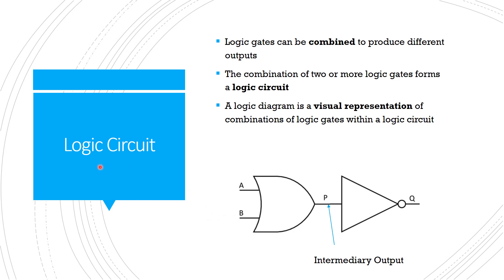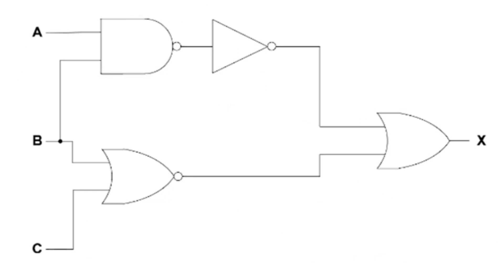Next is logic circuit. A logic circuit is basically the combination of logic gates. We have now studied 6 logic gates: AND, OR, NOT, NAND, NOR, and XOR. When we join these gates together in different ways, the result is called a logic circuit. The combination of two or more logic gates forms a logic circuit. For example, here I have joined an OR gate and a NOT gate. The output of the OR gate, called P, becomes the input of the NOT gate — this is called an intermediary output.